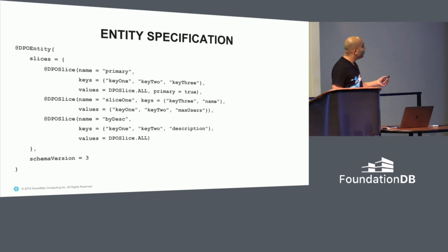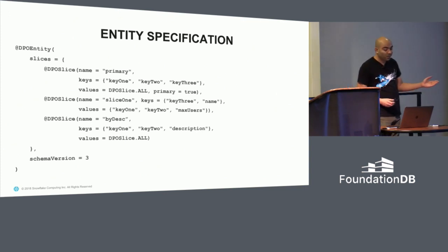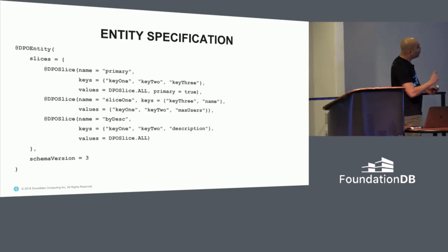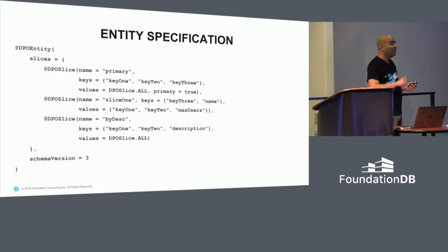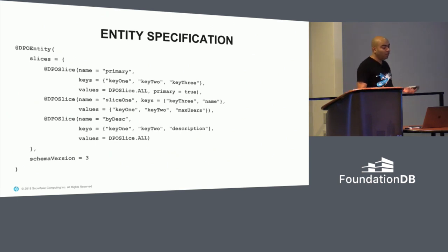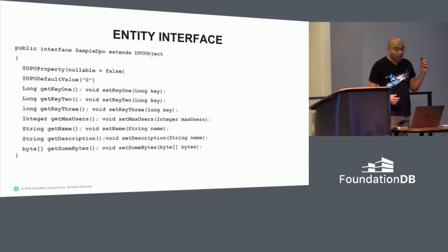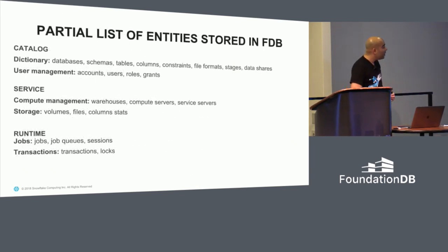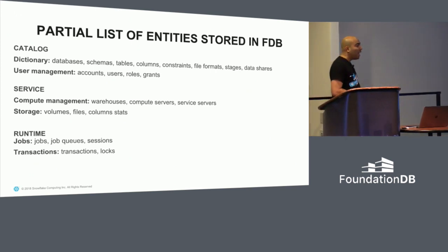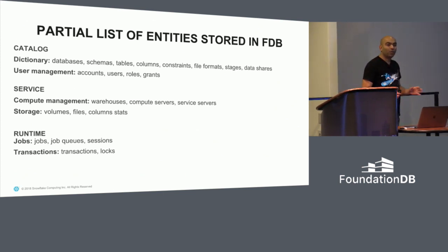Here's a rough sense of what an entity specification looks like — it's really simple. It's a set of properties that exist in an entity: in this case, three keys and all the values. Then you can specify what we call a slice — the same object but a vertical partition — which gives you an index. By building all of these, we were able to cobble up a ton of different entities. The last I checked, just a couple of days ago, we had close to 200 entities.